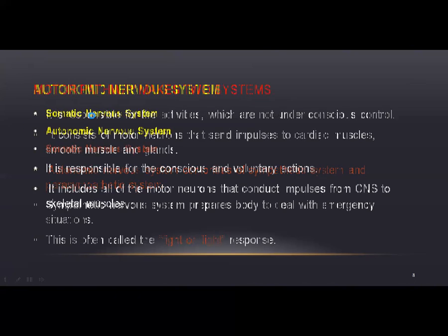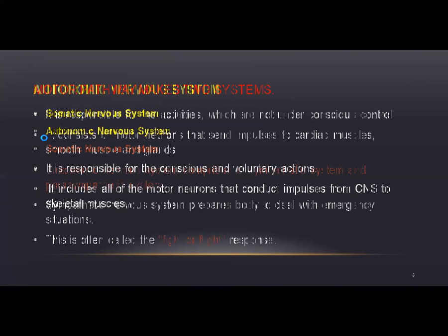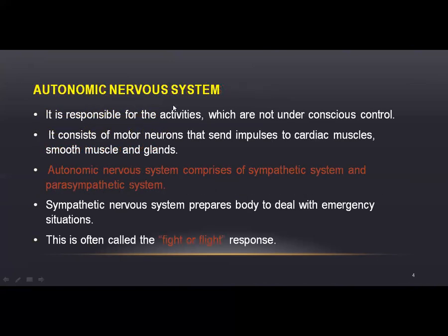The next one is the Autonomic Nervous System. In the autonomic nervous system, there will be involuntary action. Involuntary action will not be controlled by the body consciously. These are responsible for activities which are not under conscious control.